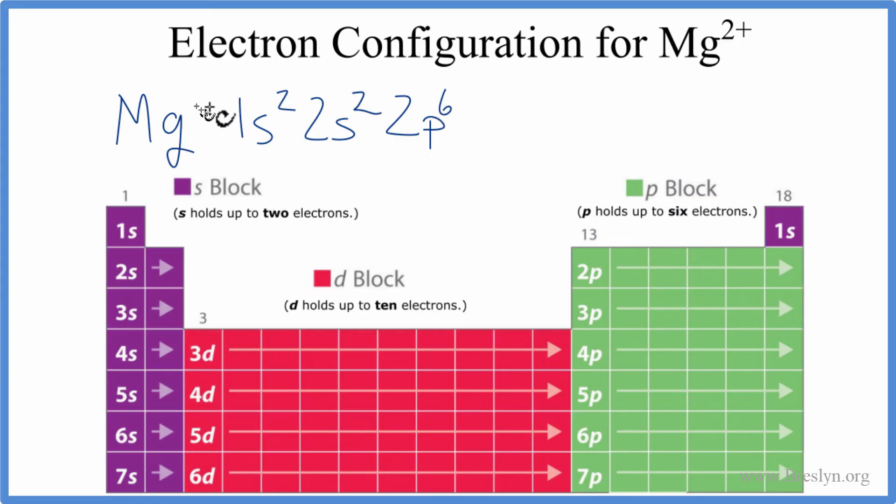So now this is the electron configuration for Mg2+. So by losing those 2 electrons, we now have the second energy level. That's 2 here. That has 6 plus 2. That has 8 valence electrons. That's very stable. This is the same electron configuration as neon.